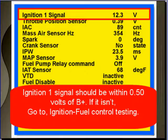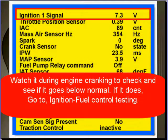Ignition 1 signal should be within a half a volt of battery plus. If it isn't, go to ignition fuel control testing. Watch it during engine cranking to check if it goes below normal. Below normal is a half a volt lower than battery voltage during cranking. If it does that, go to ignition fuel control testing.